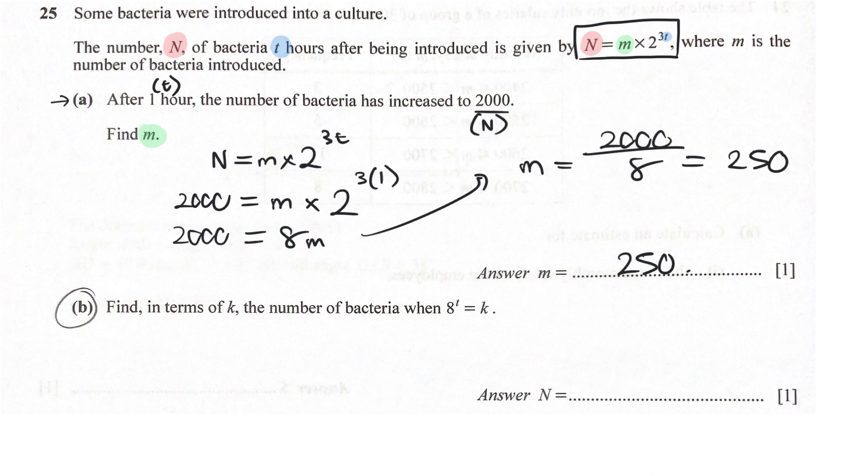What's very important now is that the formula is now updated, where M is now 250 multiplied to 2 power 3T. Now note, T is still a variable, time taken. And N is the number of bacteria.